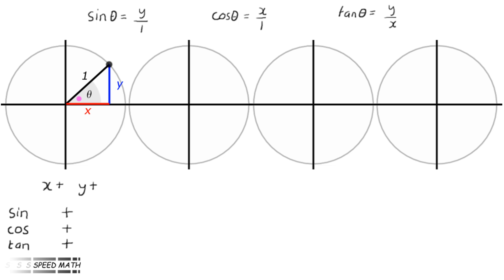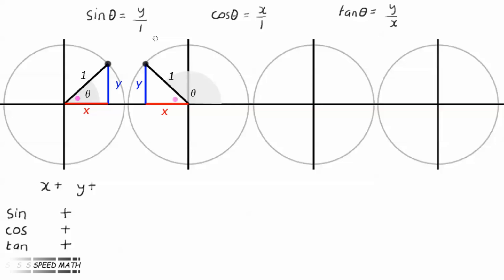Looking at the second diagram, if we rotate the radius around a bit further so it sits in quadrant 2, the angle it represents is somewhere between 90 and 180 degrees. X is negative and y is positive, so sin theta is plus y over 1, therefore positive. Cosine theta is minus x over 1, therefore negative. Tan theta is plus y over minus x, therefore negative.